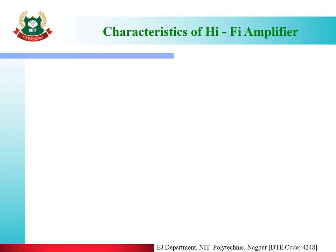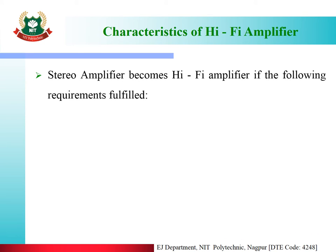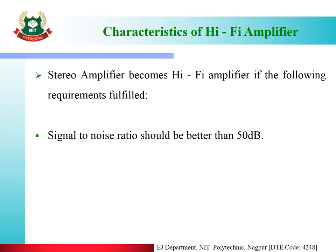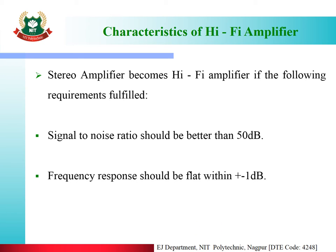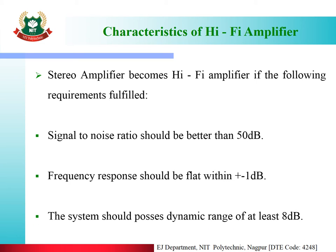Next are the characteristics of the hi-fi amplifier. A stereo amplifier becomes a hi-fi amplifier if the following requirements are fulfilled. The first requirement is the signal to noise ratio should be better than 50 dB. The second requirement is the frequency response should be flat within plus or minus 1 dB. The third requirement is it should possess a dynamic range of at least 8 dB.